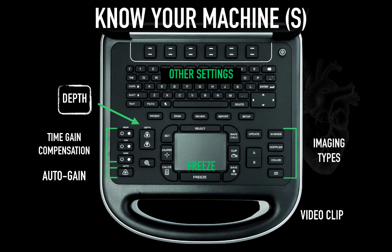First, you really need to know your machine and be comfortable with the buttons and their location. The last thing you want is to be in a crisis and not know where gain, depth, freeze, or save are — so make sure it is like the back of your hand. This is the Sonosite Edge, shown with its corresponding keys. These tutorials will mainly use the Edge and Xport as display models, though other models including the Philips CX50 and VividEye are in circulation but are slowly being phased out. The goal is to achieve homogeneity of machine access for this curriculum to ensure universal approachability.